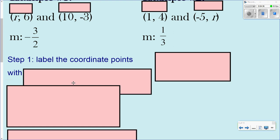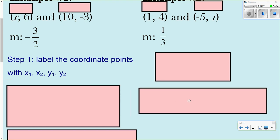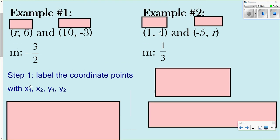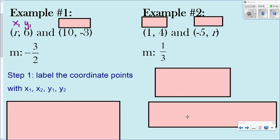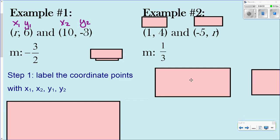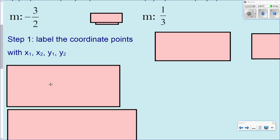The first step is to label the coordinate points x1, y1, x2, y2. Once you've done that, step two is to set up a proportion using the slope formula, which is y2 minus y1 over x2 minus x1.